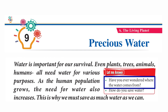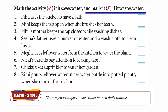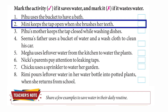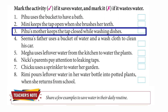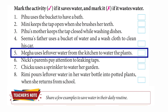Have you ever wondered where the water comes from? How do you save water? Mark the activity right if it saves water and wrong if it wastes water. Pihu uses a bucket to have a bath — right. Binnie keeps the tap open when she brushes her teeth — wrong. Pihu's mother keeps the tap closed while washing dishes — right. Seema's father uses a bucket and washcloth to clean his car — right. Megha uses leftover water from the kitchen to water the plants — right.